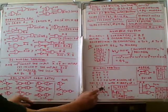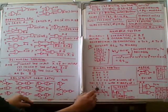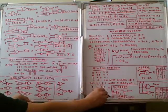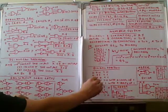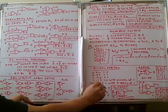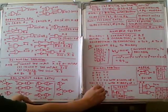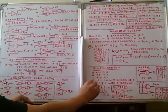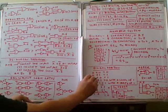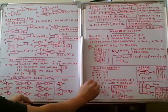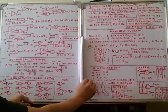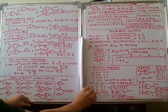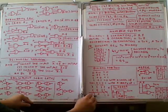Now we add 1011 and 1011. Starting from the right: 1 plus 1 is 0, carry 1. Next column: 1 plus 1 plus carry 1 gives 1, carry 1. Next: 1 plus 1 plus carry 1 gives 1, carry 1. Leftmost: 1 plus 1 plus carry 1 gives 1, carry 1. The answer is 10110.